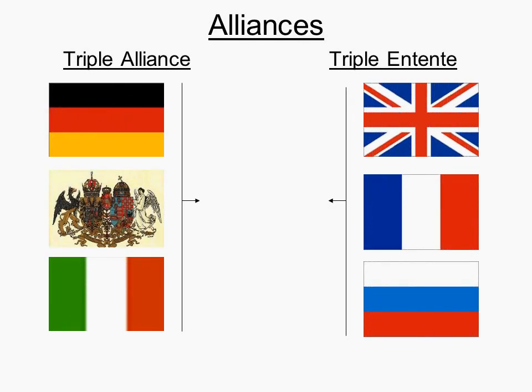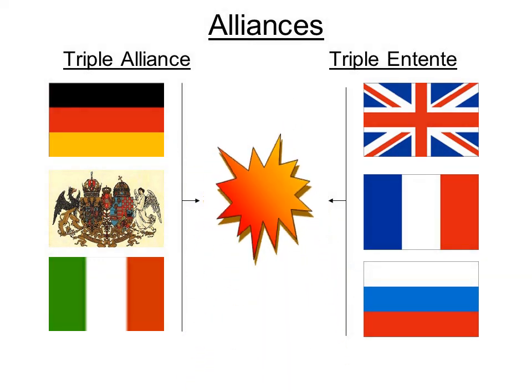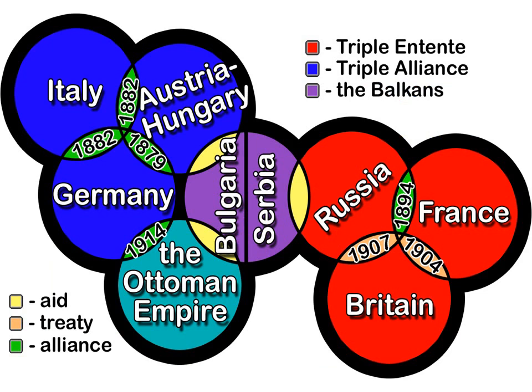There were two alliance systems. The first was the Triple Alliance and the second was the Triple Entente. The Triple Entente included Russia, France, and Britain. The Triple Alliance included Italy, Austria-Hungary, and Germany.